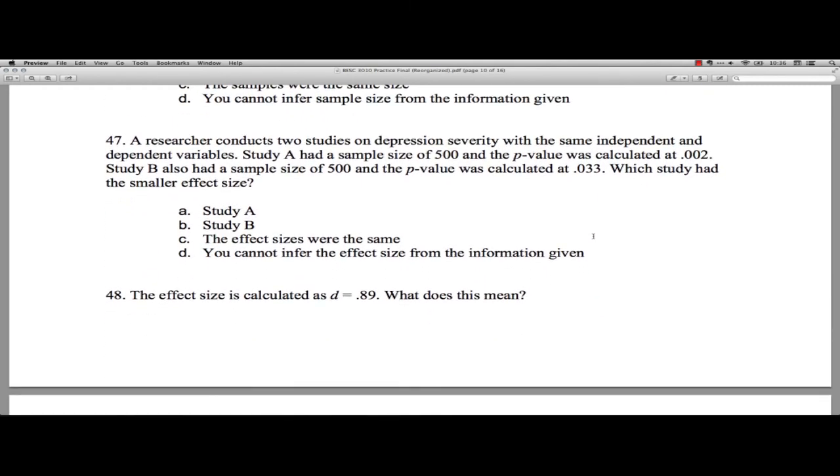47. A researcher conducts two studies on depression severity with the same independent and dependent variables. Don't forget, independent means the cause or the manipulated variable, and dependent is the outcome variable that's affected by or depends on the independent variable. Study A had a sample size of 500 and the p-value was calculated at 002. Study B also had a sample size of 500, and the p-value was calculated at 033. So same sample sizes, but different p-values. Which study had the smaller effect? Okay, remember, now we're holding the sample size constant. The larger effect will have the smaller p-value. Similarly, the smaller effect will have the larger p-value. They're negatively related. And so which one had the smaller effect size? We're looking for the one with the bigger p-value. Well, that's study B because it's at 033. That's a bigger value than the 002 on the other one. So study B is the answer.